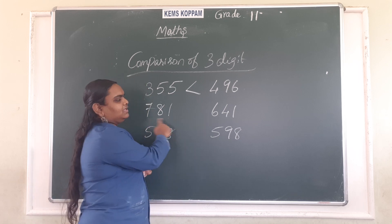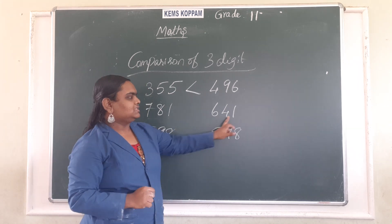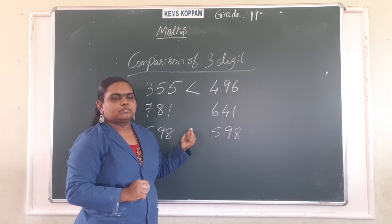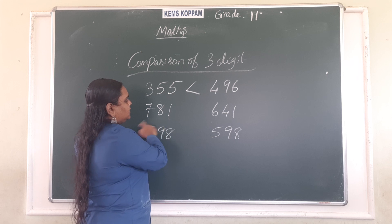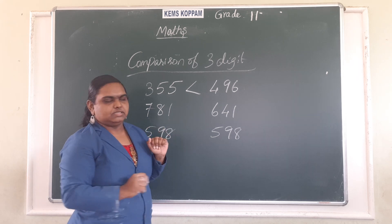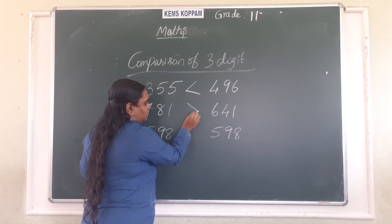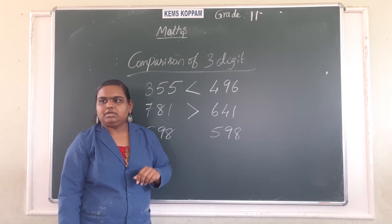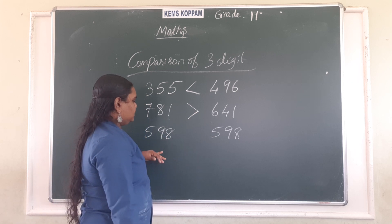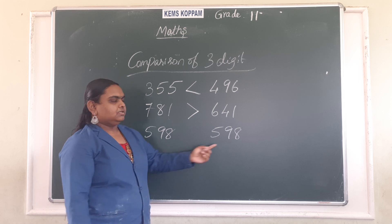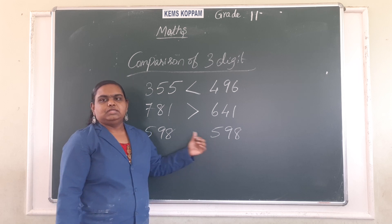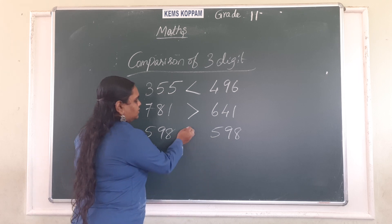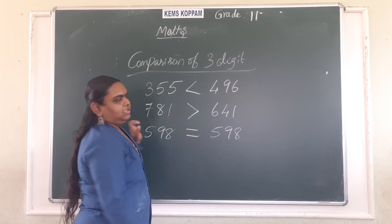Next one is seven hundred and eighty-one and six hundred and forty-one. Which is the greatest number here? Seven hundred and eighty-one is the greatest number, so we have to put the symbol greater than. Next, five hundred and ninety-eight and five hundred and ninety-eight — these two numbers are equal, so we write the symbol equal to.